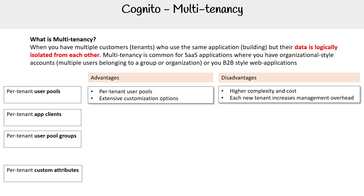To me, per-tenant user pools is the one that is basically true multi-tenancy. The rest I don't really consider true multi-tenancy, because they don't isolate enough data to actually be multi-tenancy, in my opinion. But this is what AWS docs say they have.